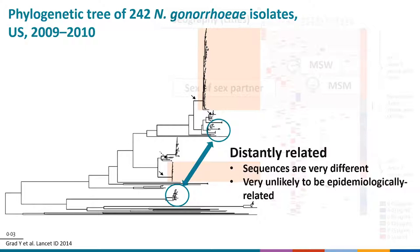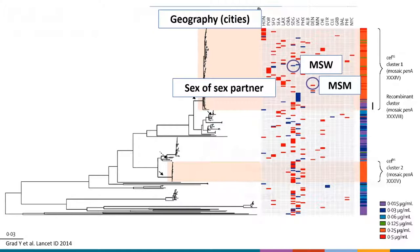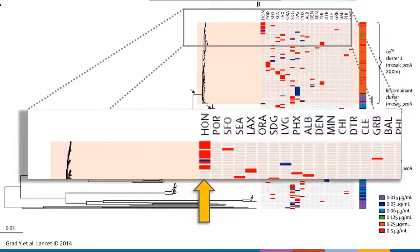The usefulness of sequencing data can be greatly enhanced by incorporating epidemiological data. For example, the phylogeny includes the geographic location of the person who submitted the isolate across the top, and the gender of their sex partners denoted by red or blue bars. We can see hints of possible transmission patterns — a cluster of isolates from Honolulu, Hawaii, mostly from MSM. Very closely related sequences were found in an MSM in San Francisco, an MSW in Las Vegas, and an MSM in Greensboro, North Carolina, suggesting a sexual network connecting these individuals across populations and locations.